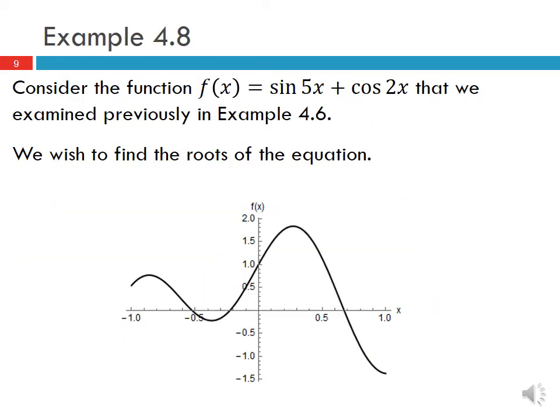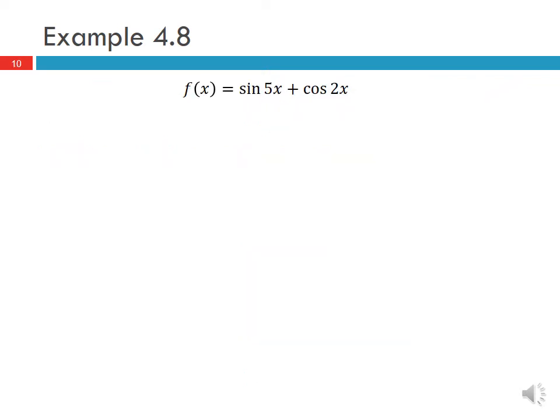For an example, consider f of x equal to sine of 5x plus cosine of 2x, which we examined previously in example 4.6. We wish to find the roots of this equation. Plotting the function from minus 1 to plus 1 shows three roots. We need the derivative: f prime of x equals 5 cosine of 5x minus 2 sine of 2x.